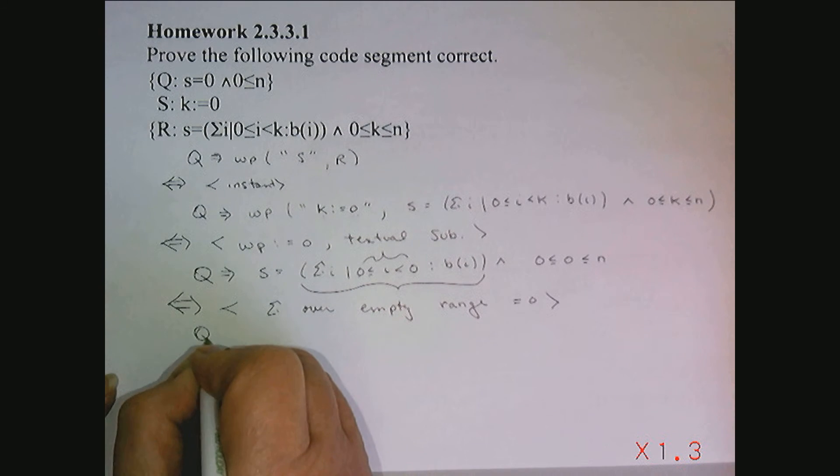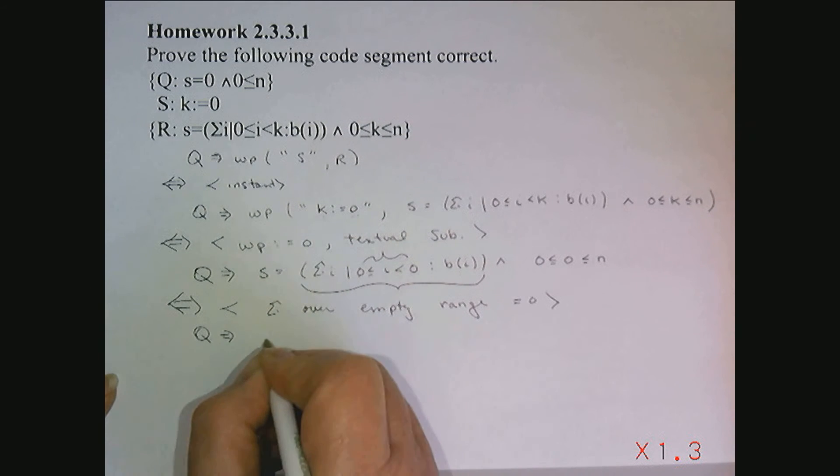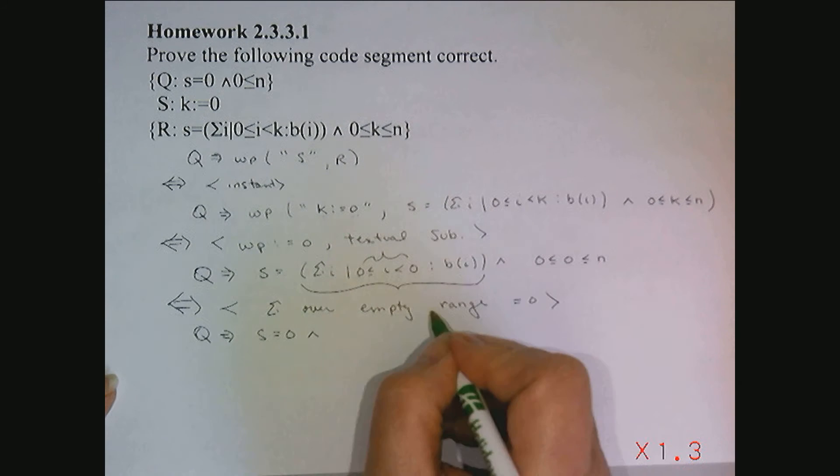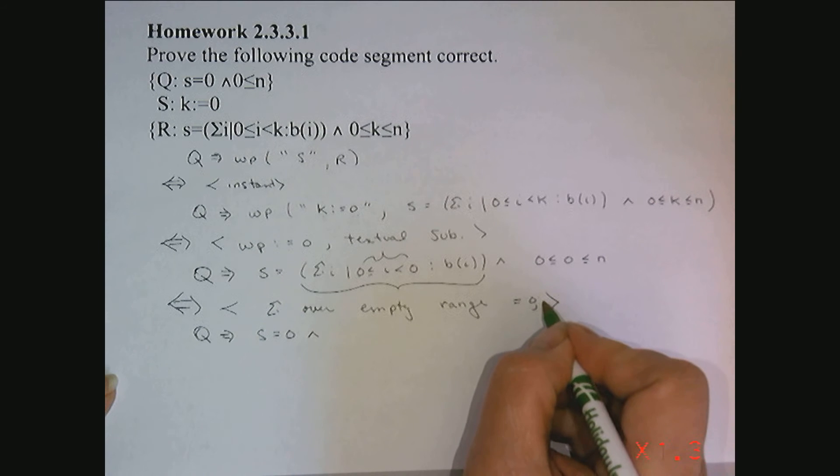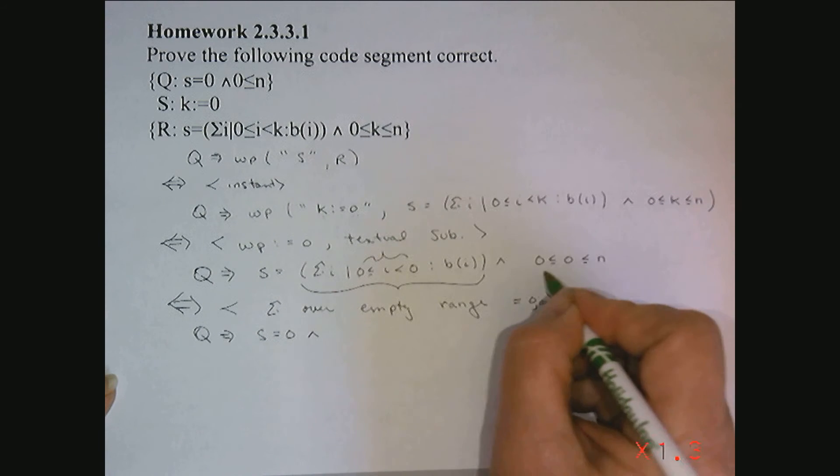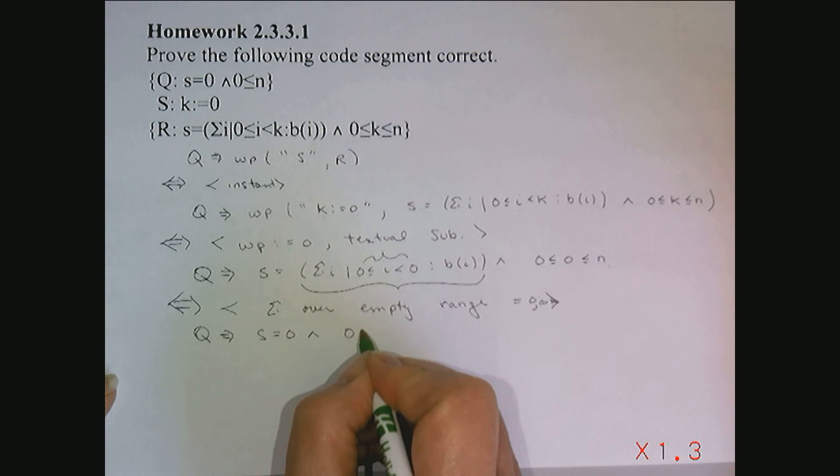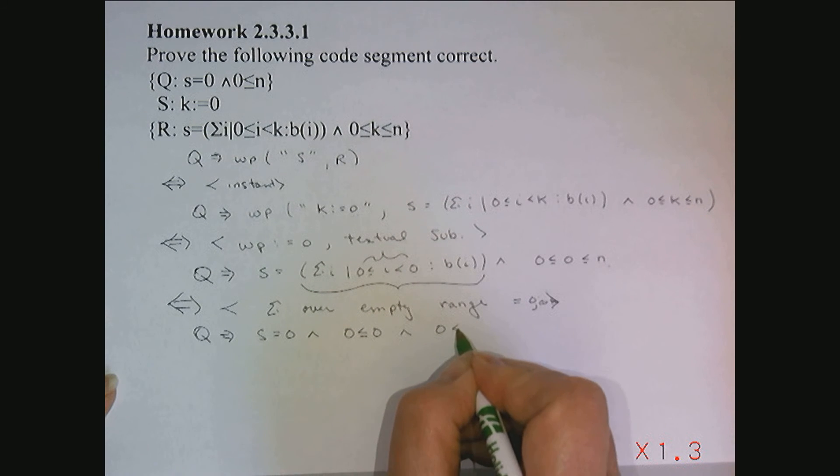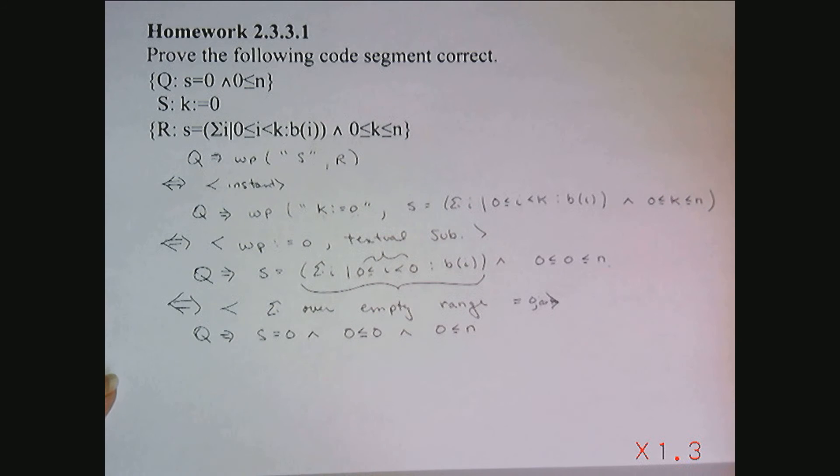So I have Q implies S is equal to 0, and, let's see, let's do some arithmetic too. Notice that this interval, I could write as 0 is less than or equal to 0, and 0 is less than or equal to N.